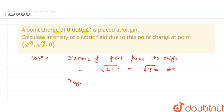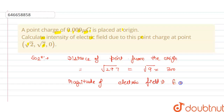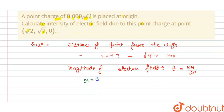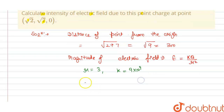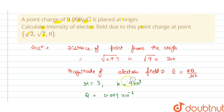Now the magnitude of electric field: E is equal to kq divided by r squared. We have r = 3, k = 9 × 10⁹, and the charge is 0.009 × 10⁻⁶, that is in microcoulombs, so this is 10⁻⁶ coulombs.